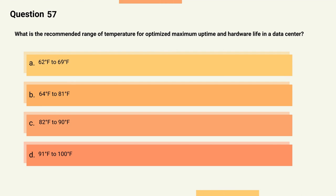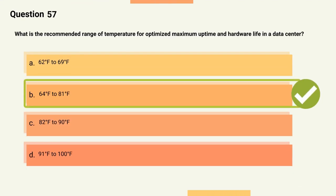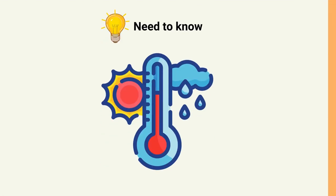Question 57: What is the recommended range of temperature for optimized maximum uptime and hardware life in a data center? Options: A) 62–69°F, B) 64–81°F, C) 82–90°F, D) 91–100°F. The correct answer is Option B, 64–81°F (18–27°C). Explanation: The recommended range for optimized maximum uptime and hardware life is from 64°F to 81°F (18°C to 27°C).